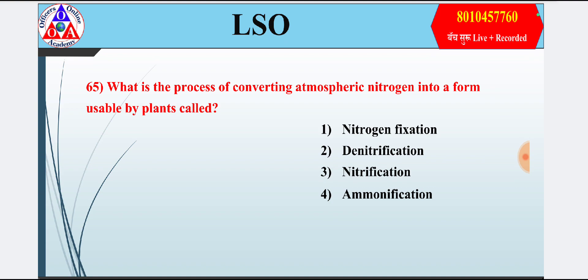Question 5: What is the process of converting atmospheric nitrogen into a form usable by plants called? Option 1: nitrogen fixation; option 2: denitrification; option 3: nitrification; option 4: ammonification. Answer is option 1 — nitrogen fixation.